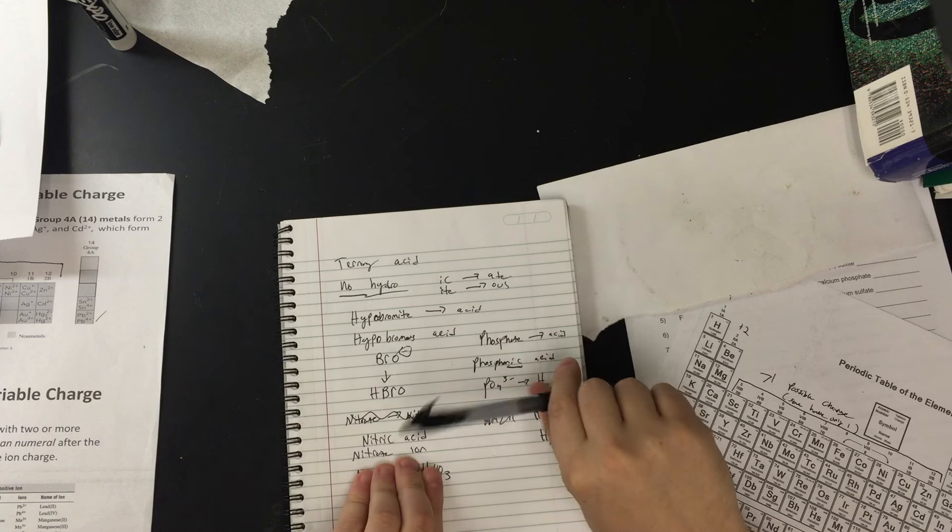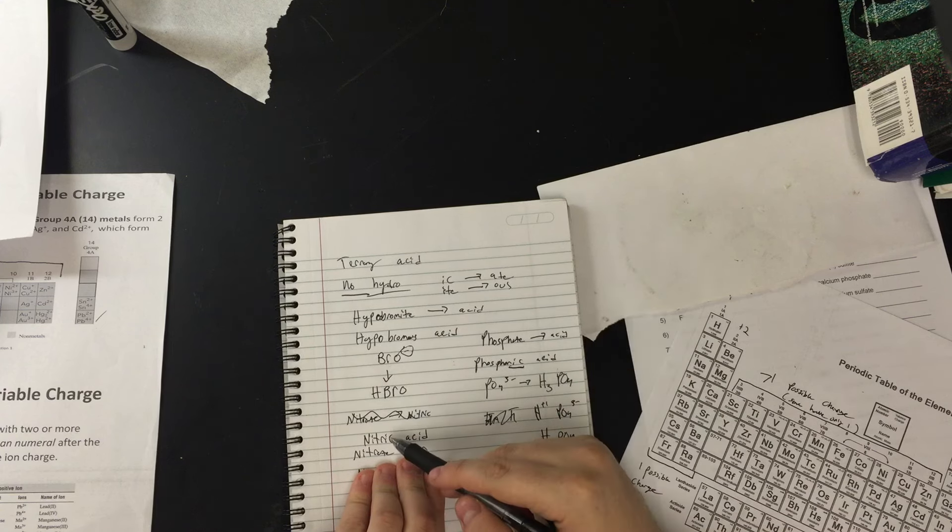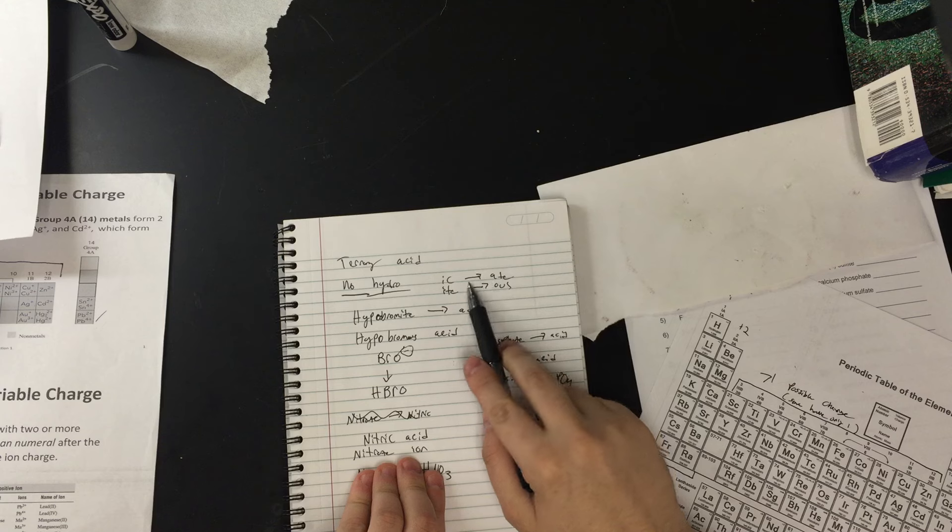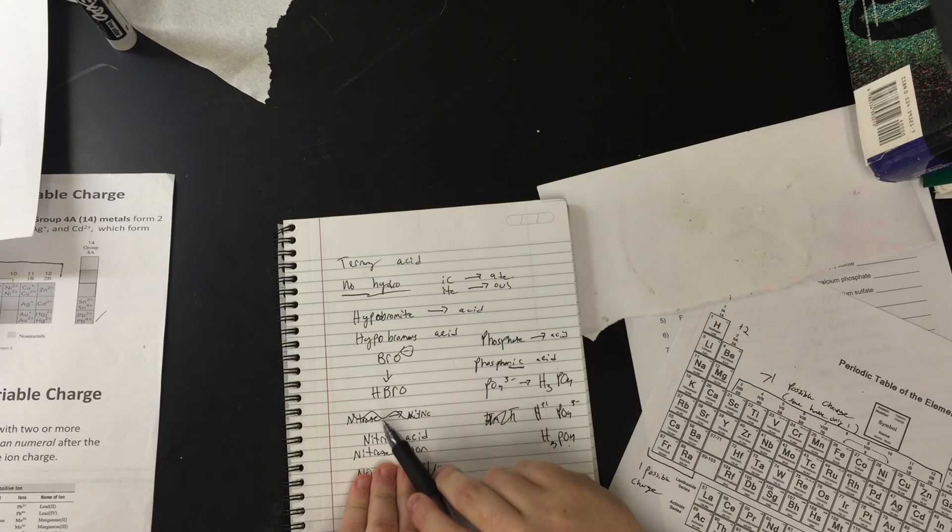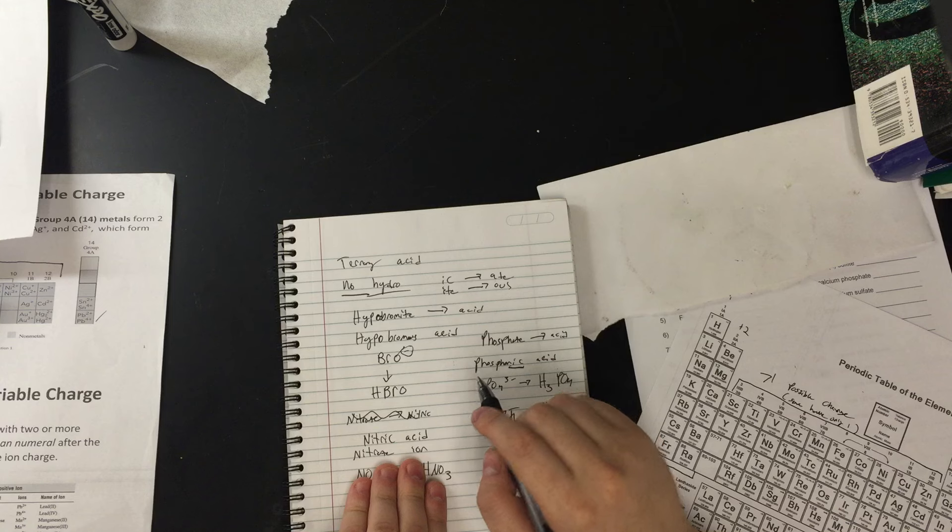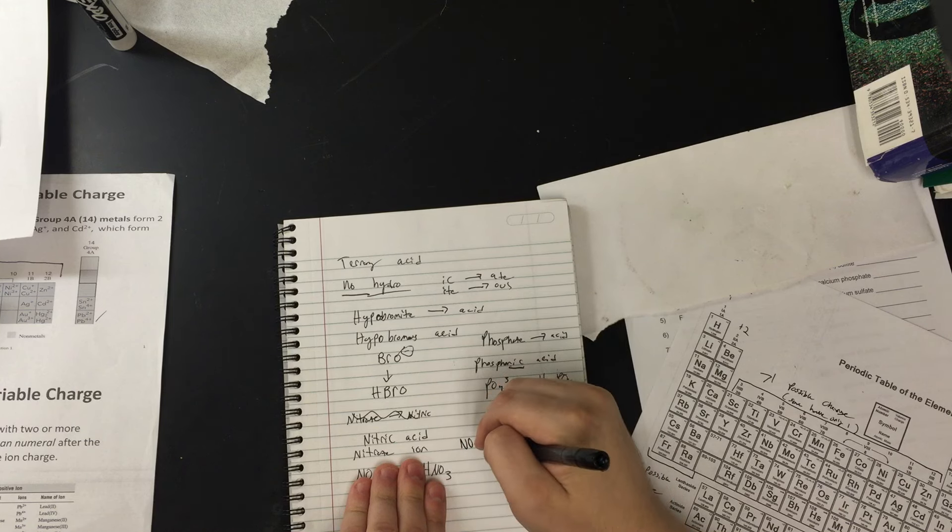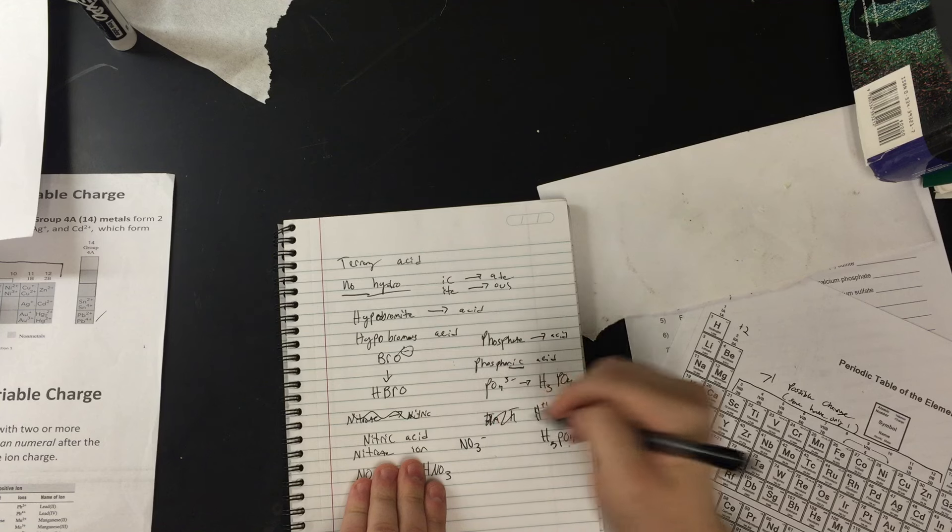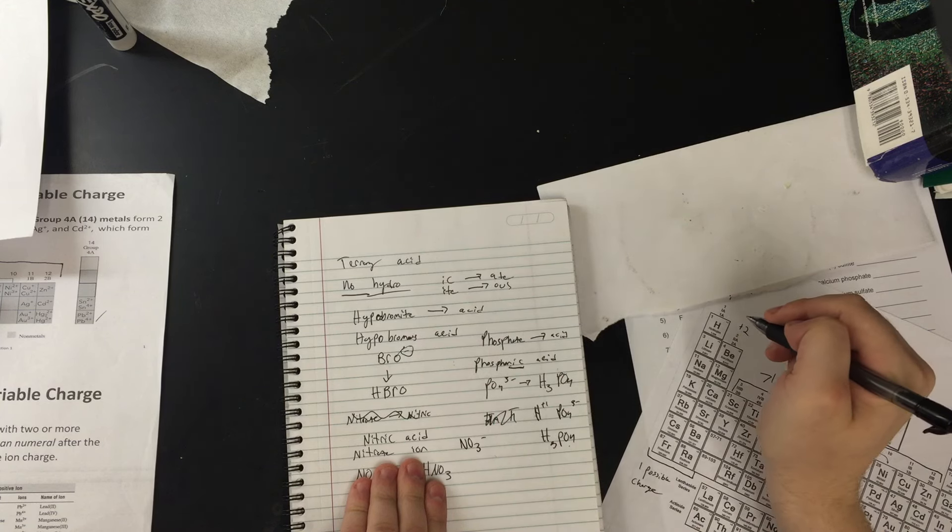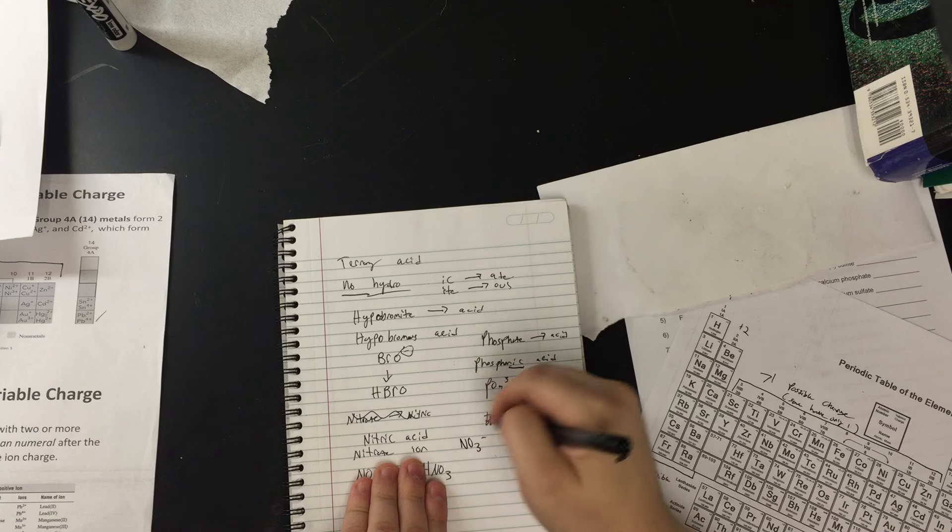What about nitric acid? Let's look at nitric. What do you think it's going to be? So ic is going to go to ate. Ic will go to ate. Nitrate. What's the formula for nitrate? NO3 minus. So how many hydrogens is it going to need to balance out? This is a minus 1. H has a plus 1. We're just going to turn it to HNO3.